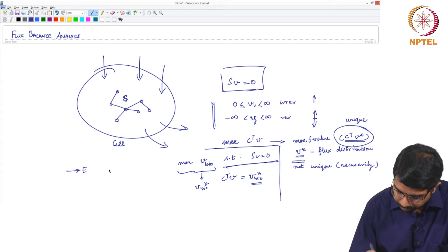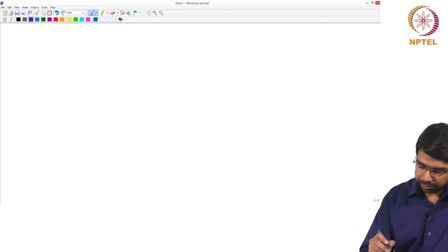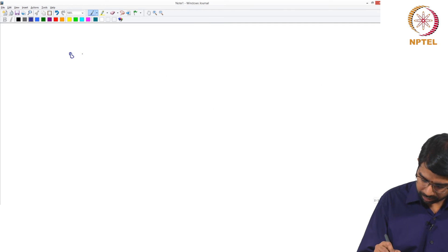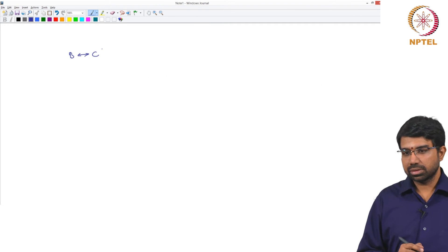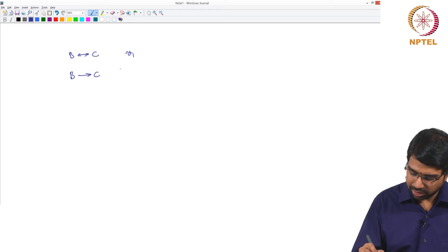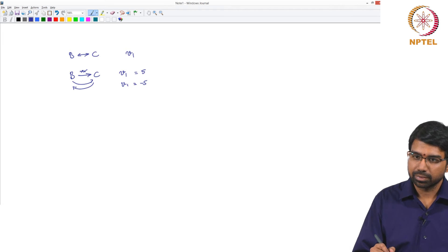So what I am saying is, let us take the same reaction. I have a reaction like this. If I say V1, what is it, is it the flux for the forward reaction or the backward reaction? So it makes sense if I say that this is a reversible reaction with V1 as the flux. So now if V1 is 5, it means B is going to C. If V1 is minus 5, it means C is going to B. It can only tell you which side is dominant, it does not tell you if a reaction is reversible or not.